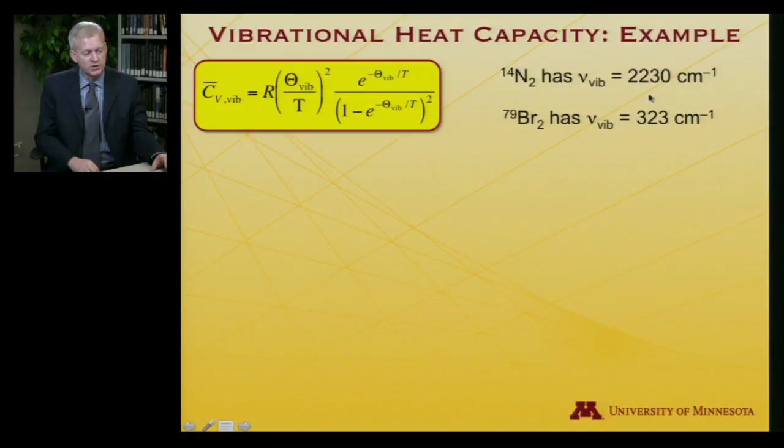If you go and you measure with an infrared spectrometer, actually you can't use infrared, you'd have to use Raman here, but that's the subject of a different class. In any case, the vibrational frequencies can be determined, and they are 2,230 wavenumbers for molecular nitrogen, and only 323 wavenumbers for molecular bromine. A much higher energy stretch for N2 with its triple bond than for bromine with its single bond.